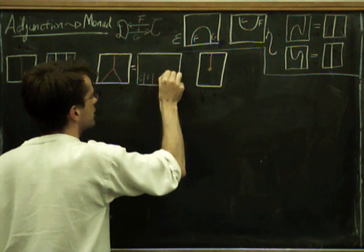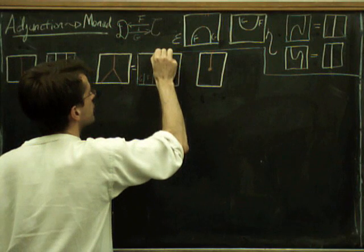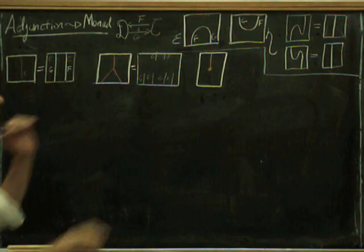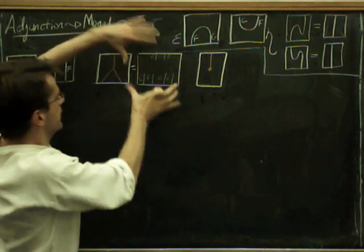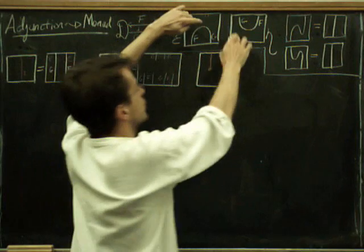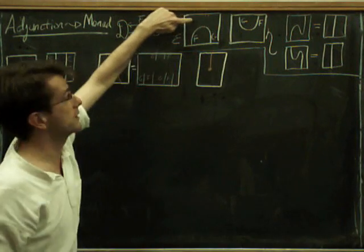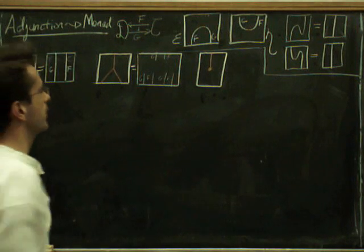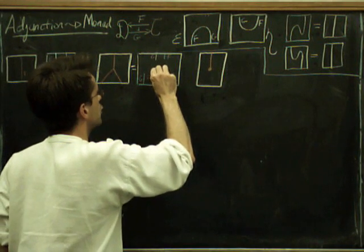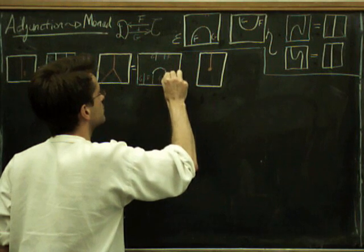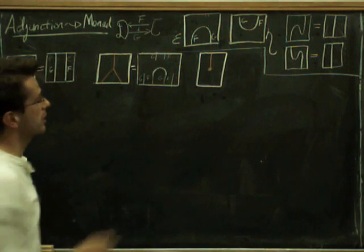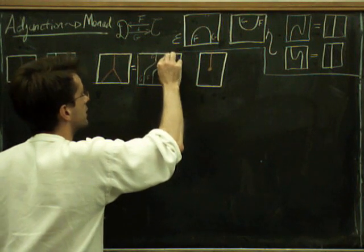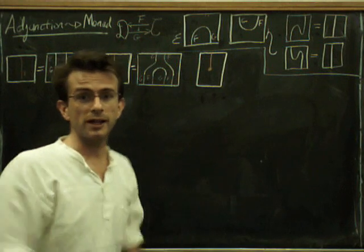We've got to build ourselves a natural transformation, and all the information we've got is these two things at the top — that's the only natural transformation we can play with. So it's pretty obvious what a sensible thing to do is: we just use epsilon — a little cap there — and we just take the identity on G and the identity on F. So there's not a lot else we could actually do there.